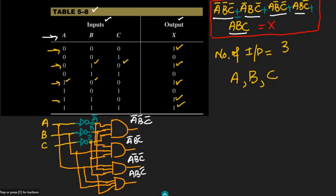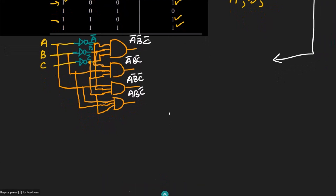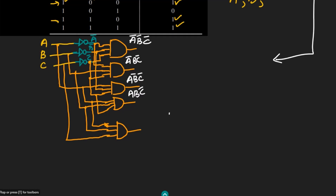The last AND gate implements A B C, where all three inputs are uncomplemented. A is taken directly, B is taken directly, and C is taken directly. The output of this gate is A B C.